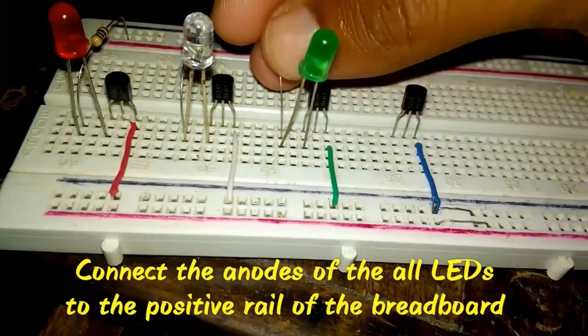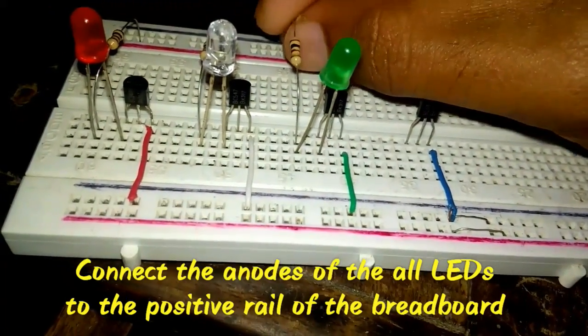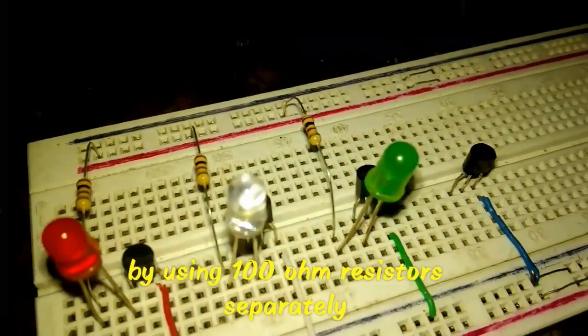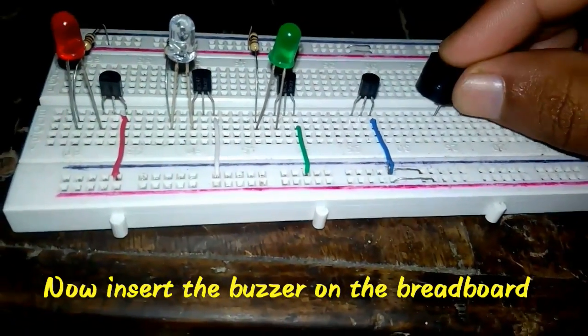Connect the anodes of all LEDs to the positive rail of the breadboard by using 100 ohm resistors separately. Now insert the buzzer on the breadboard.